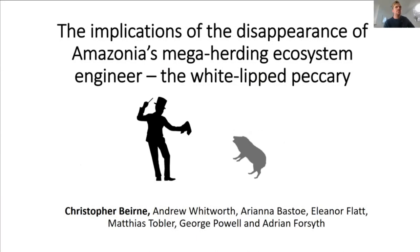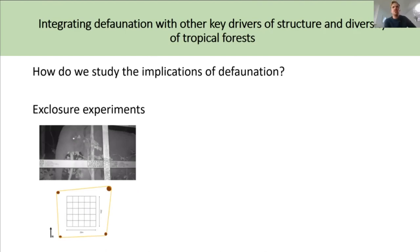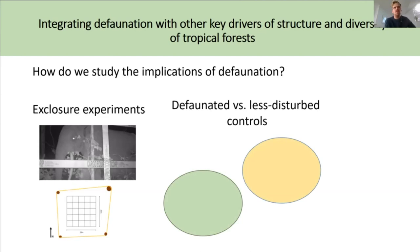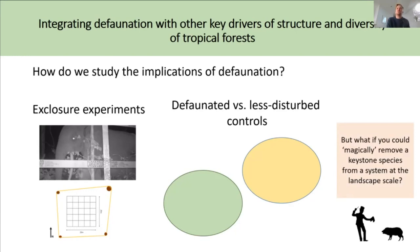How do we typically study the implications of defaunation? We might use exclosure experiments, which remove your focal species from a very constrained spatial area. We might also use defaunated versus less disturbed study sites or landscapes, which brings in issues about landscape-level variation in the underlying assemblage, making things difficult to compare. As a thought experiment, it would be interesting to think about magically removing a keystone species from a system at a landscape scale — and how that might change how we understand species assembly under a defaunation scenario.